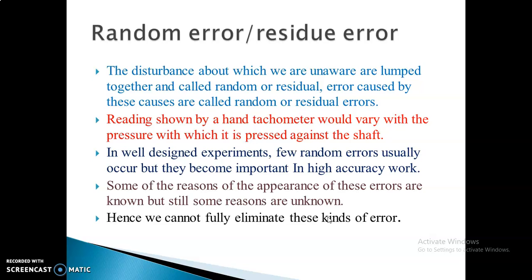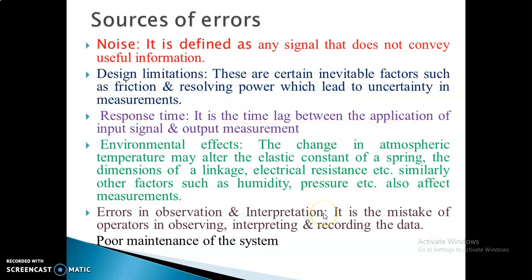Some reasons for the appearance of these errors are known, but some errors we cannot understand even while taking readings. That is what we call random error. The different sources of error are: first, noise; second, design — if the design properties are not proper; third, response — which is the lag between the application of input and the output signal, also called response time.